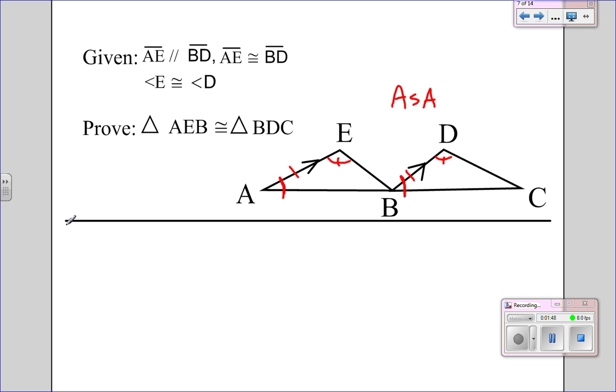And let's go ahead and write the final copy of the proof. So we've got our given AE is parallel to BD. We also have AE is congruent to BD, and that's in the given. Notice those are separate givens.